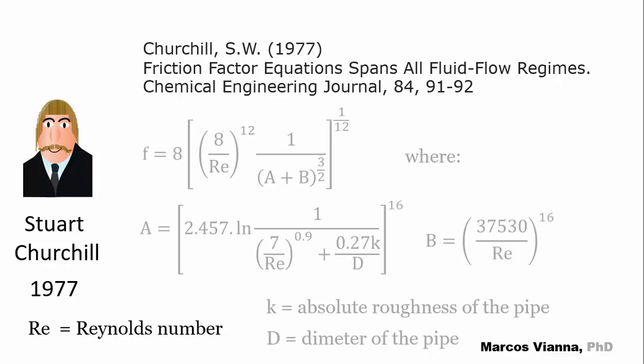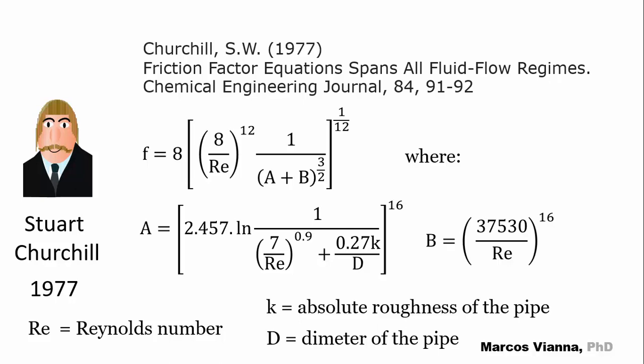As in the previous formula, you just must know the Reynolds number and the K over D relationship. Knowing them, you calculate A, B, and you find f, which depends on the values of A and B.